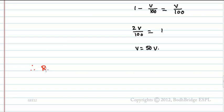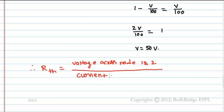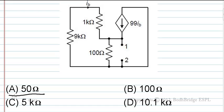Therefore, Thevenin's resistance RTH equals voltage across nodes 1 and 2 divided by current through nodes 1 and 2, which equals V by 1. This equals 50 by 1, which is 50 ohms. So the answer is option A: 50 ohms.